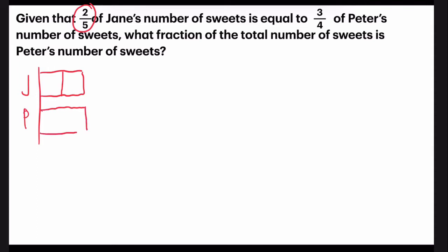So remember, bearing in mind, it should be of the same length. So let me use a black color. Okay, because they're saying that it's the same amount. But remember, for Peter, it's cut into three parts because it's three-quarters of Peter's.